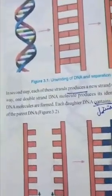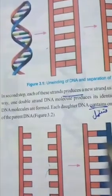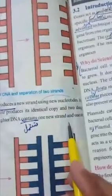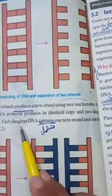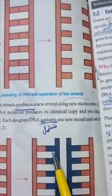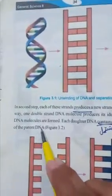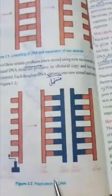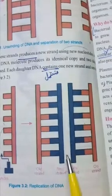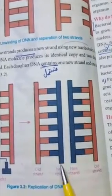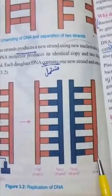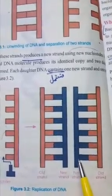Each daughter DNA contains one new strand and one strand of the parent DNA. Har daughter DNA ke paas ek new strand aata hai. Jaise yeh old strand tha, isne apni new copy taiyar ki — woh new strand hai. Is side old strand maujood tha, isne apni second side dubara taiyar kar li.